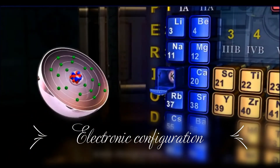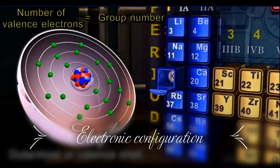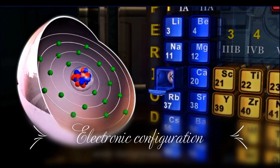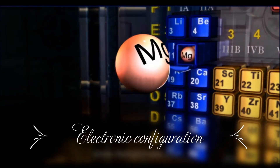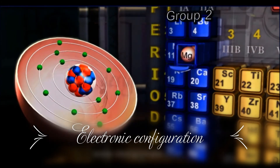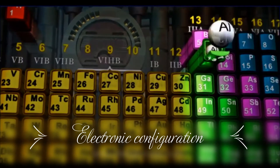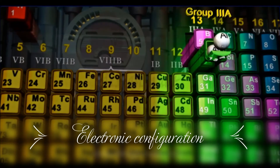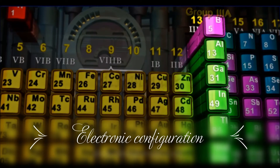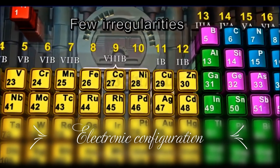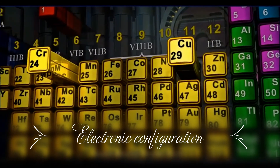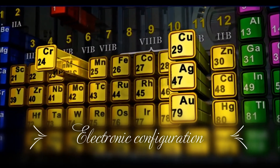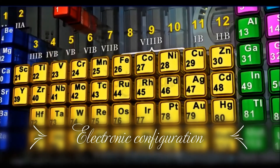The number of electrons present in the outermost or valence shell of an atom decides the group number of that element. Thus, potassium with one valence electron fits into group 1 of the modern periodic table. Magnesium with two valence electrons is placed in group 2. Aluminium with three valence electrons belongs to group 13, and so on. However, there are a few irregularities shown by some elements in their configurations, such as chromium, copper, silver, gold, etc., which we will study in a separate topic.